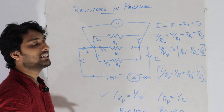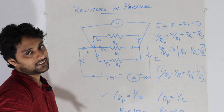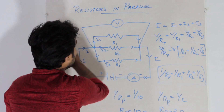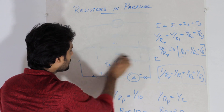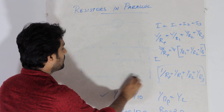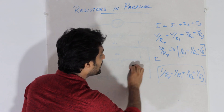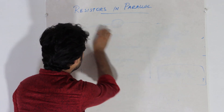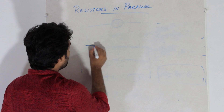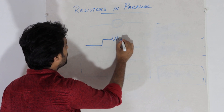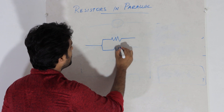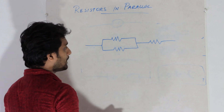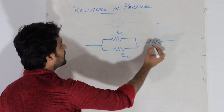Another advantage is to connect equal resistances in parallel. Here, we will connect resistors in parallel using the same resistance. One resistance, one resistance — here is R1, here is R2, here is R3, all the same.